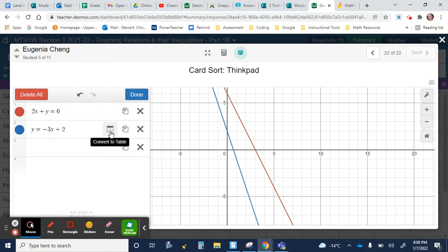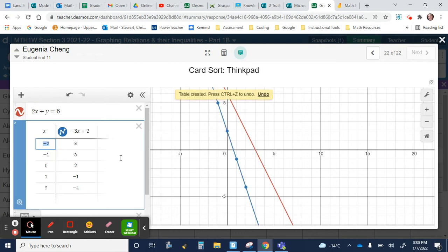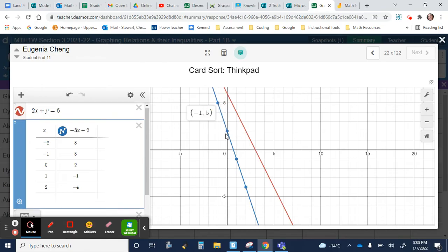Now, when I press Convert to Table, it very quickly converts or produces a table of values. So, by default, Desmos will choose values negative 2 through positive 2 and will calculate all of the corresponding y values for this linear relation. And you can see them here. So, all the values from your table are here on the graph. It's a really great feature.